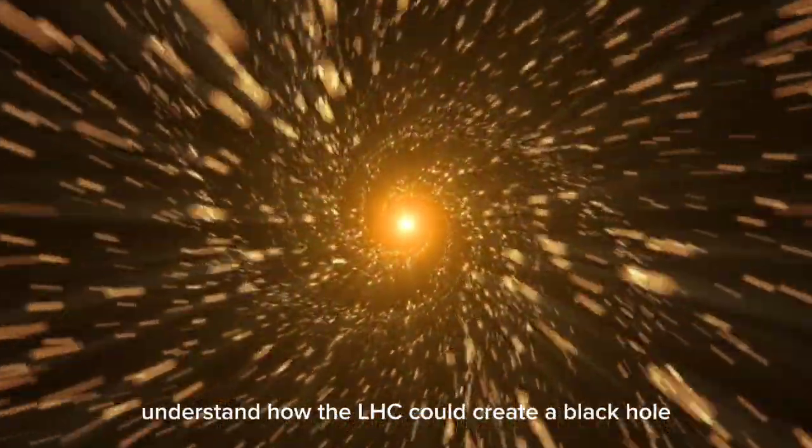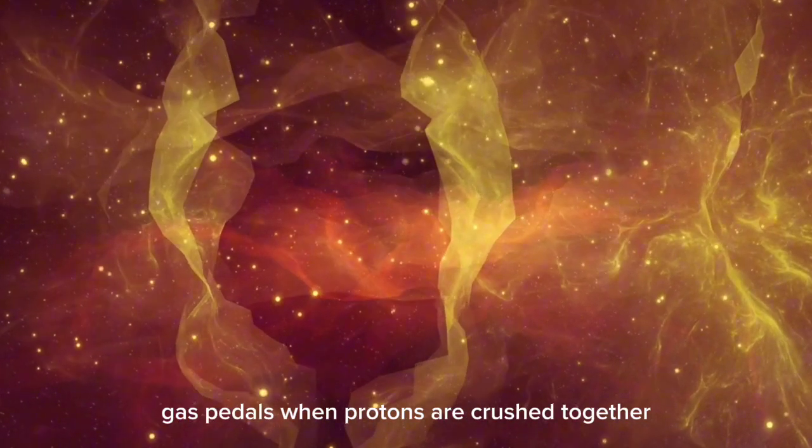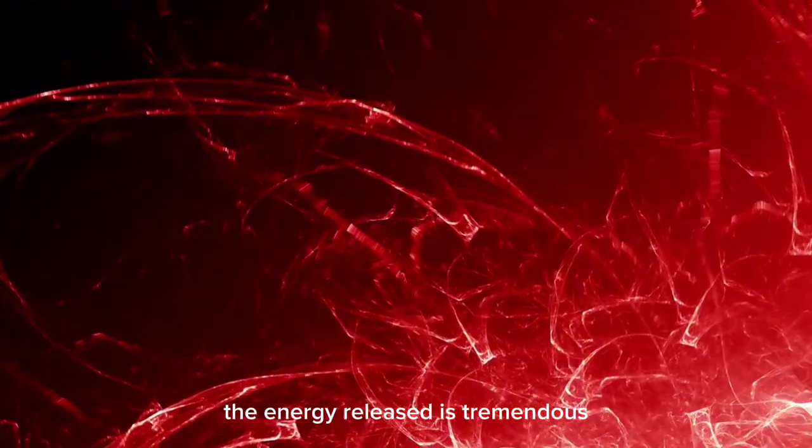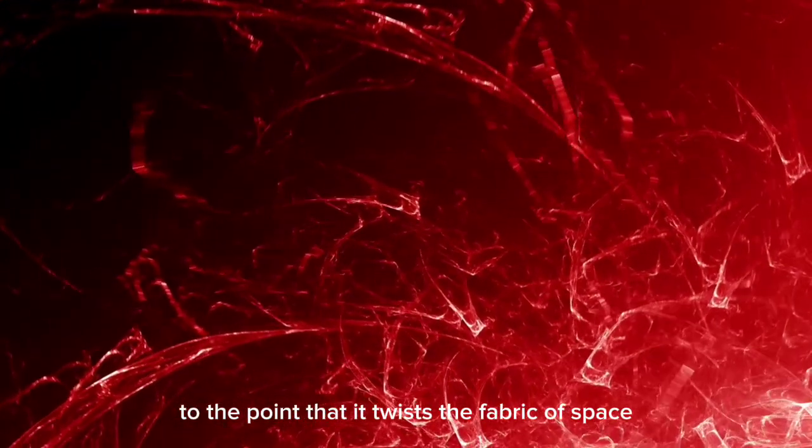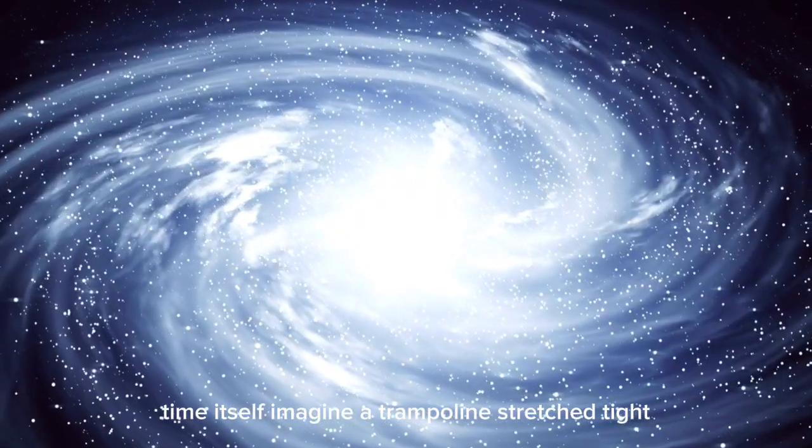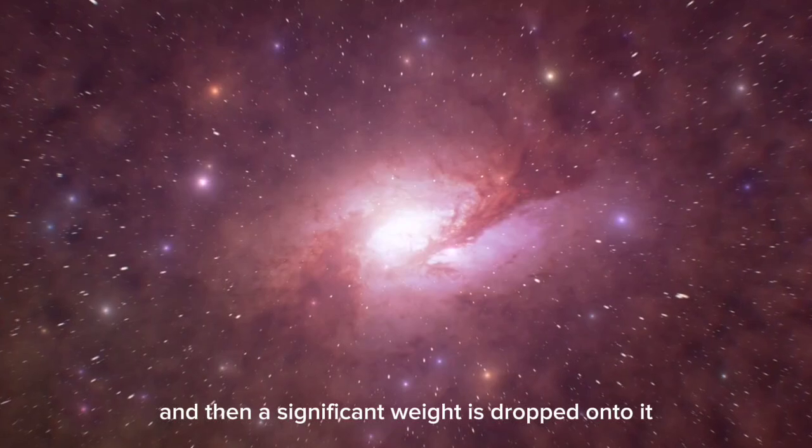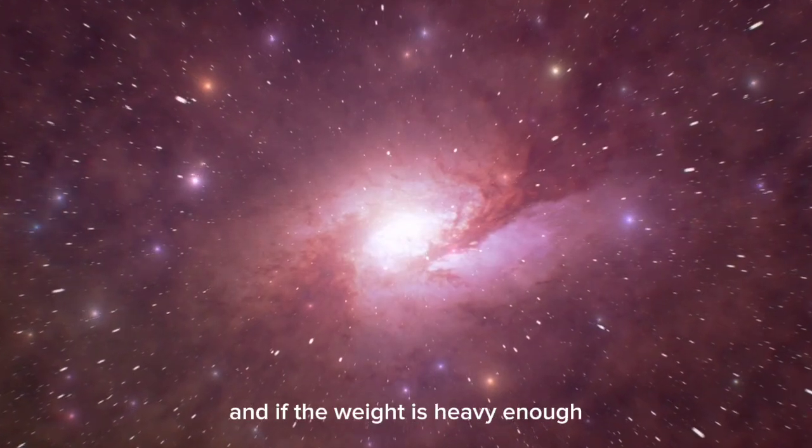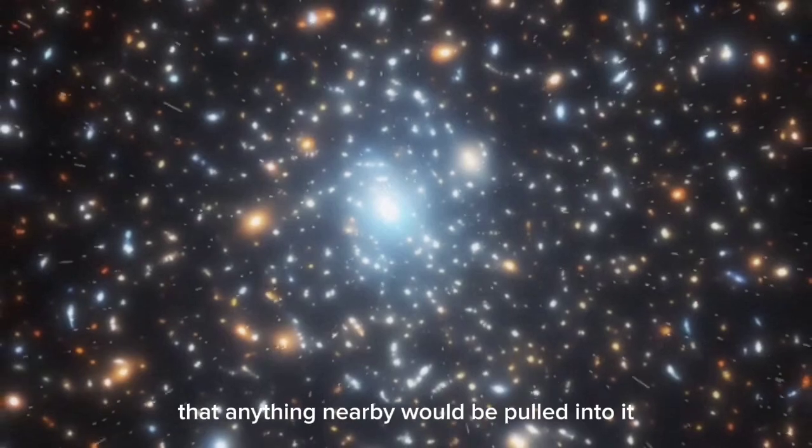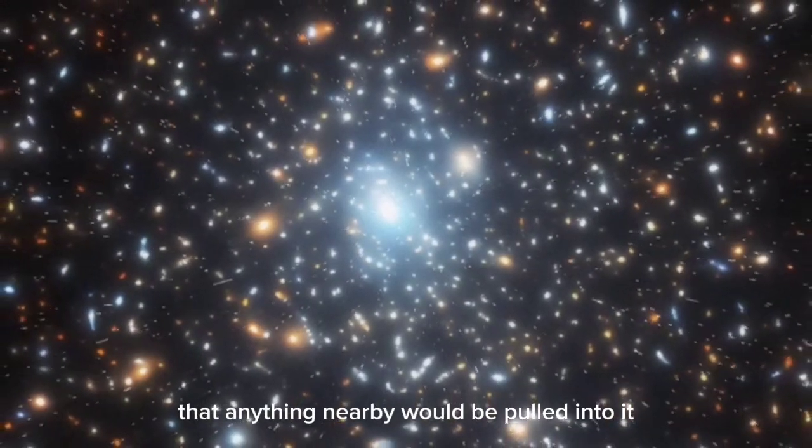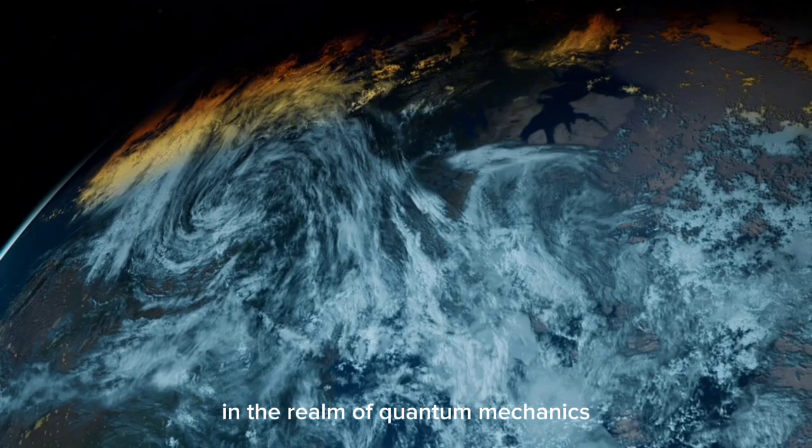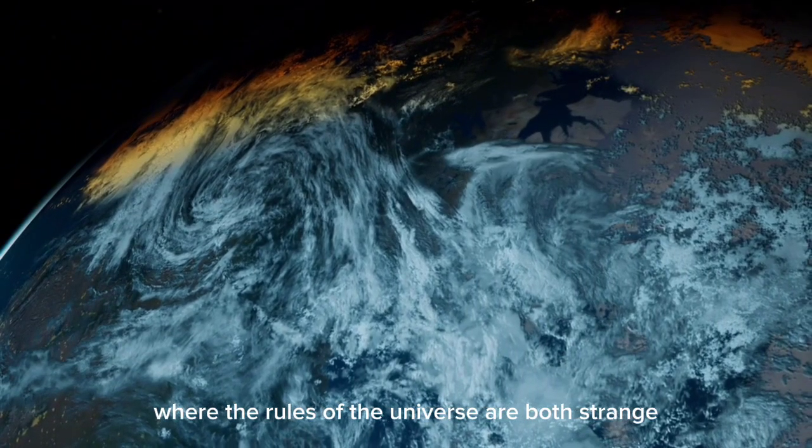It's essential to understand how the LHC could create a black hole. It has to do with the basic mechanics of molecule gas pedals. When protons are crushed together at almost the speed of light, the energy released is tremendous to the point that it twists the fabric of space-time itself. Imagine a trampoline stretched tight, and then a significant weight is dropped onto it. The fabric bends and twists, and if the weight is heavy enough, it could create a depression so deep that anything nearby would be pulled into it. That is a simplified analogy for what could happen in the LHC, in the realm of quantum mechanics, where the rules of the universe are both strange and wonderful.